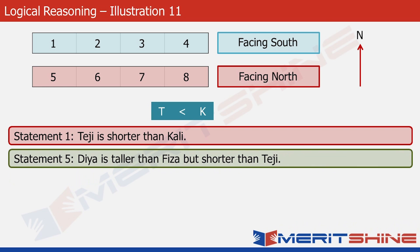Statement five says that Diya is taller than Fiza but shorter than Teji. Teji is already there in the picture. It tells us that Diya and Fiza are both shorter than Teji, and Fiza is shorter than Diya. So if we have to put it here, we will arrange them like this: F < D < T < K.